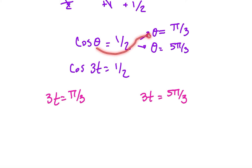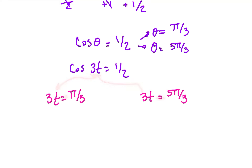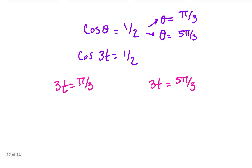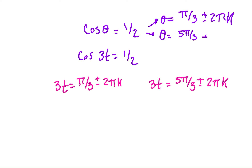Before we'd say theta equals π/3 or theta equals 5π/3 — we're not changing it. We're just now using 3t instead of theta: 3t equals π/3 and 3t equals 5π/3. Noting also that it did say find it on the interval of all real numbers, we've got to put our infinity here, so this technically was plus or minus 2πk on both. We're still doing everything the same, but now you're not done solving — there's just an extra step at the end.